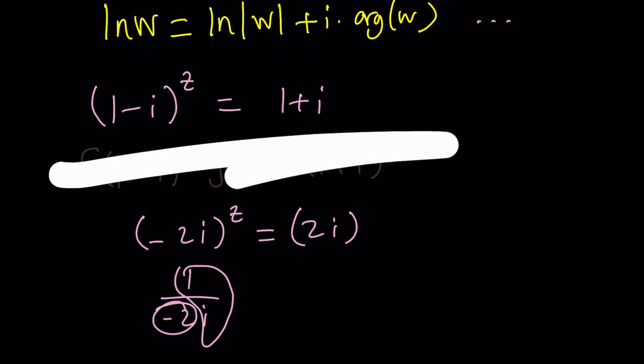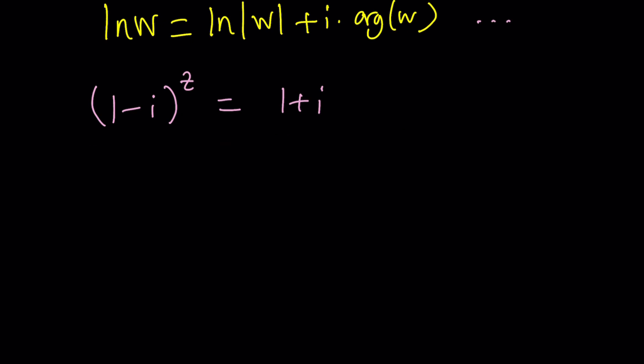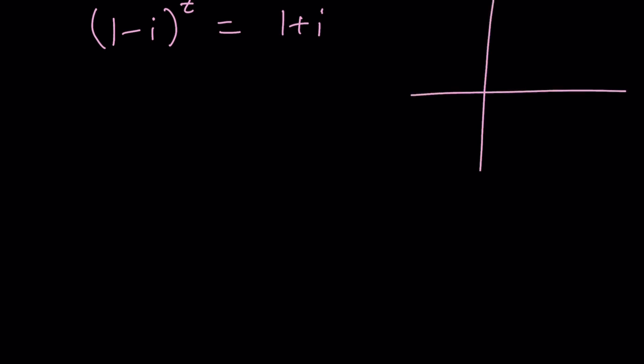I want to go ahead and actually use the polar forms. 1 minus i, if you consider the argand plane again, is going to be right here, right? So it makes basically an angle of negative pi over 4 and 1 plus i is going to make an angle of pi over 4, right?